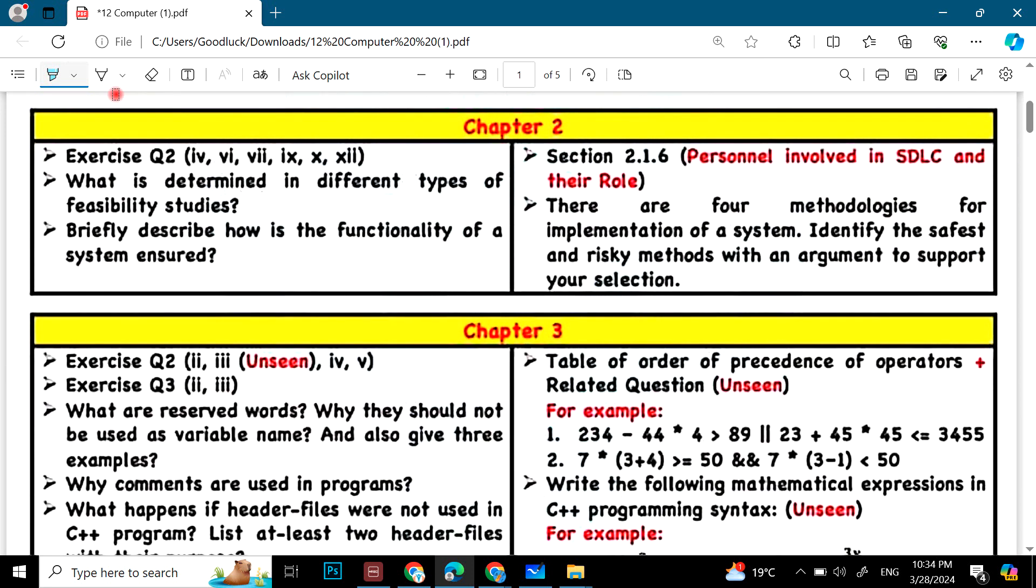Then we have chapter number 2. Exercise question number 2 is part 4, 6, 7, 9, 10 or 12. What is determined in different types of feasibility studies? Briefly describe how is the functionality of a system ensured. Section 2.1.6, personally involved in SDLC and their role. There are four methodologies for implementation of a system. Identify the safest and risky method with an argument to support your selection.